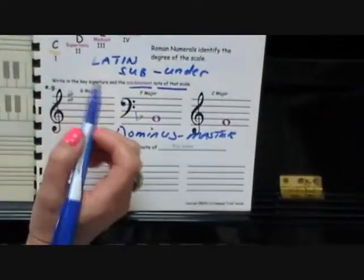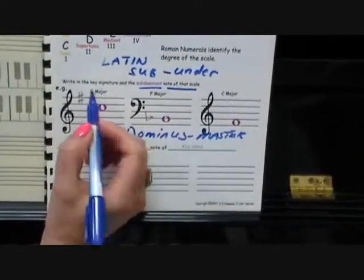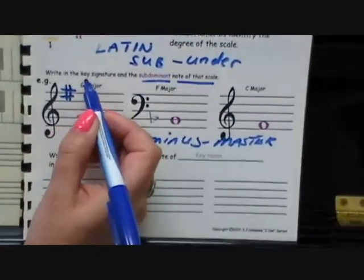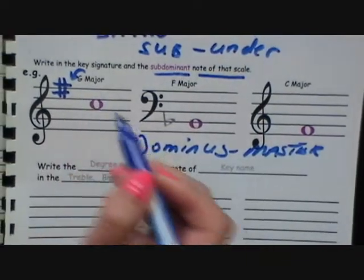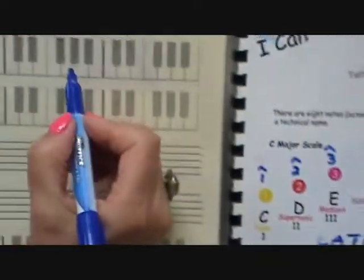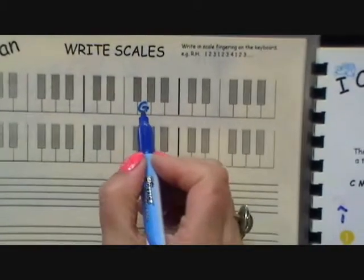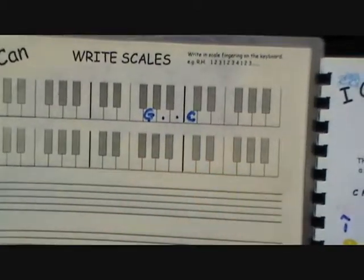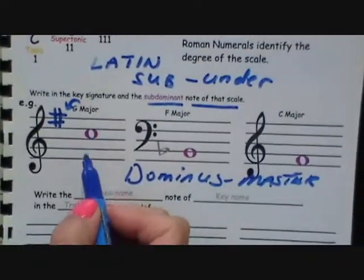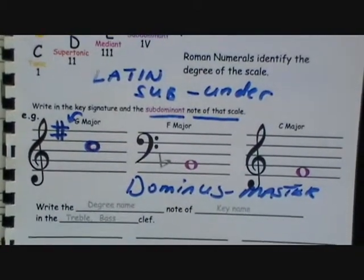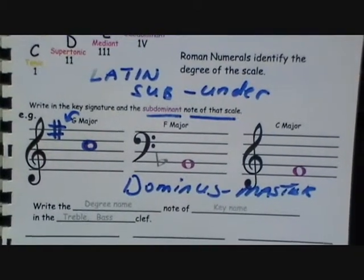We have to write in the key signature. They want G major. G major has 1 sharp, because what comes before G is F. Now let's count up for G: 1, 2, 3, 4 — where do we land? On C. So here we're going to draw in a C — the subdominant note of G major.